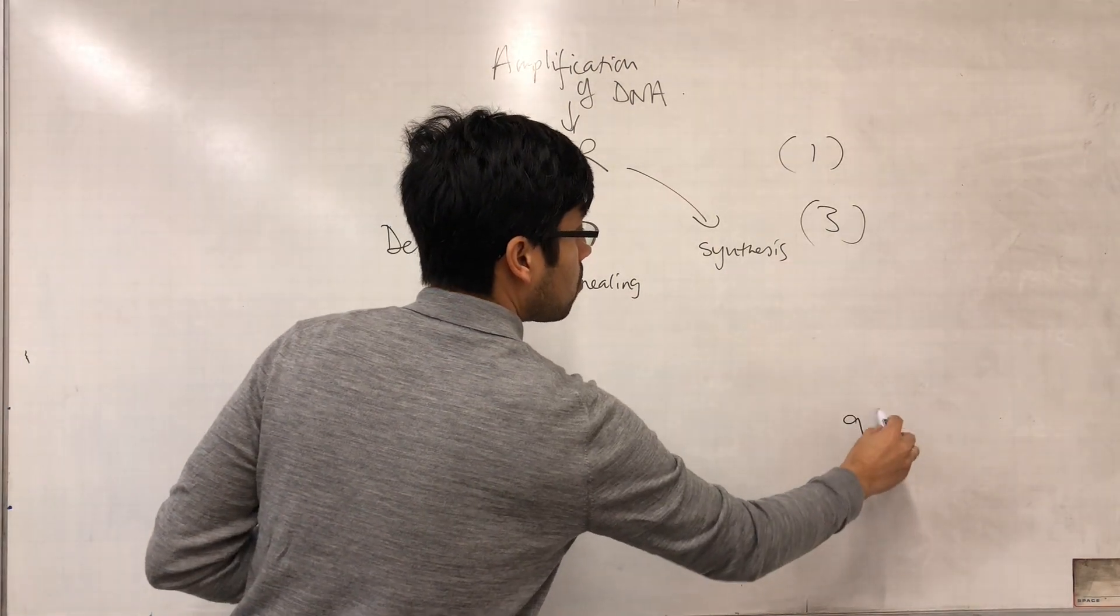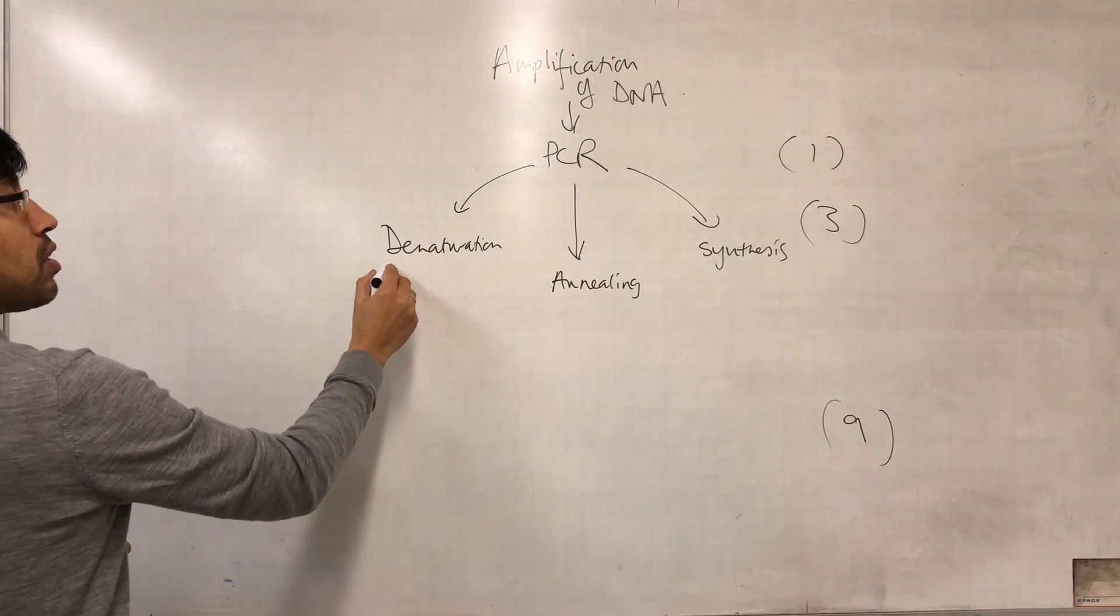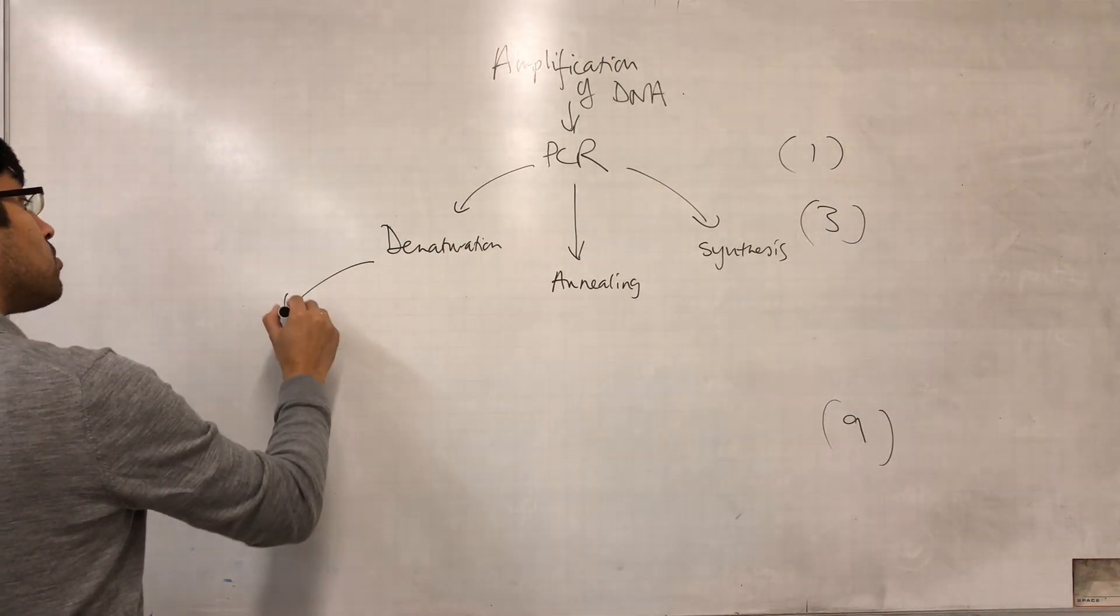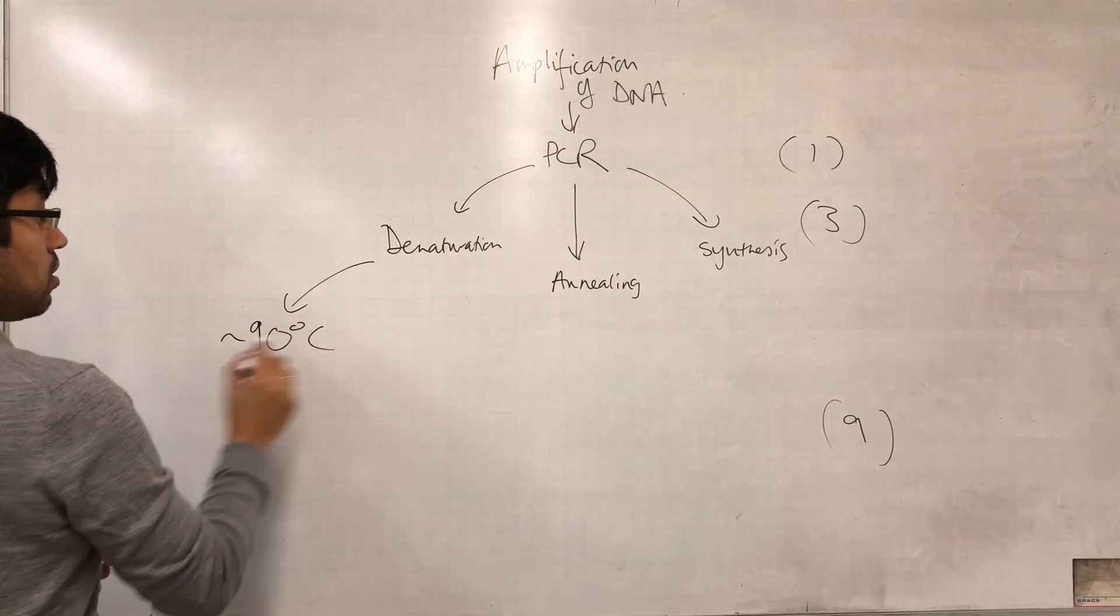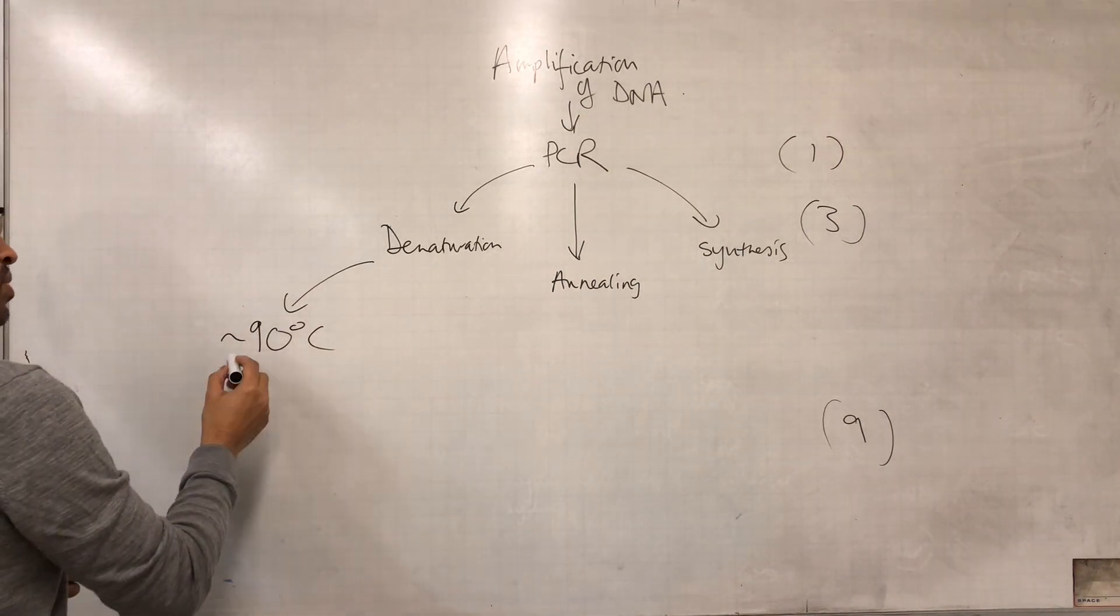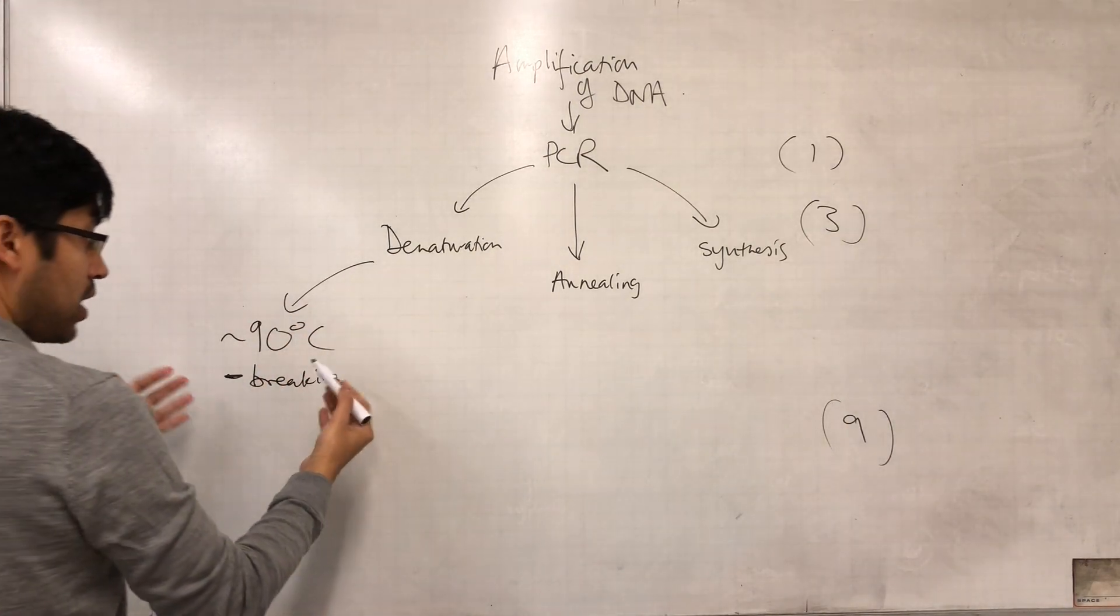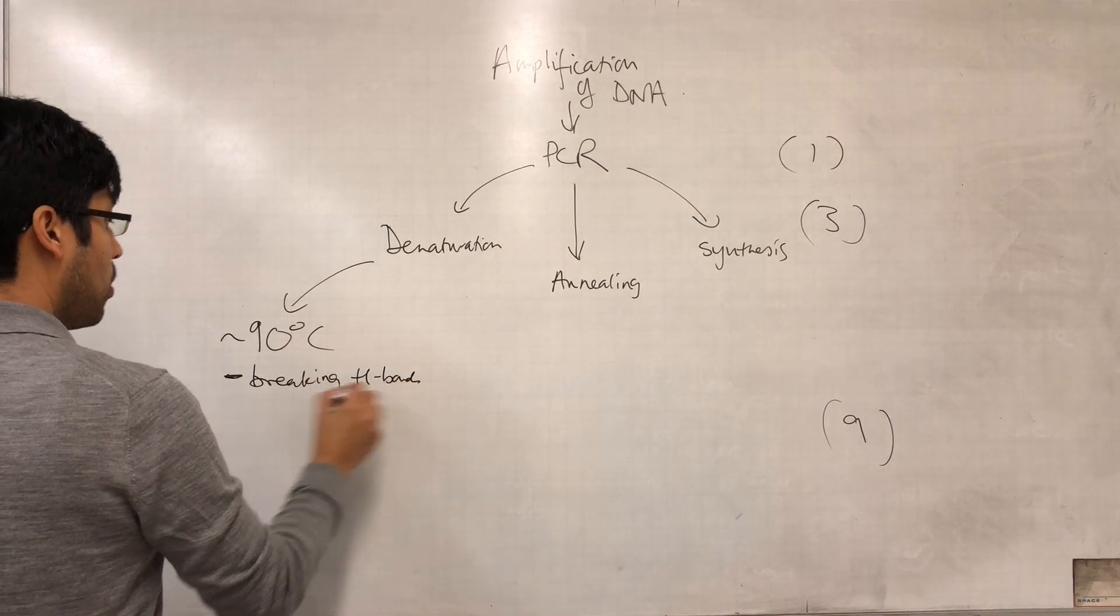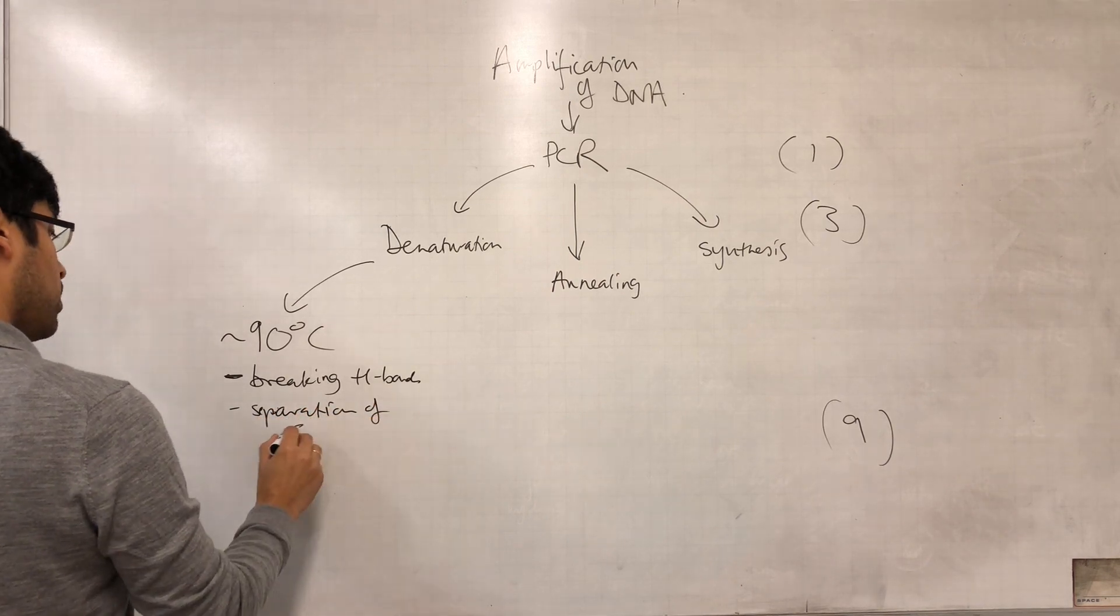But could we go to nine marks or eight marks or ten marks? Well then we start to detail what's happening during each of those steps. For denaturation we might talk about the temperature that we use, approximately 90 degrees. We'll talk about what happens during this step which gives enough kinetic energy to the molecules to break hydrogen bonds resulting in a separation of the strands, resulting in denaturation.